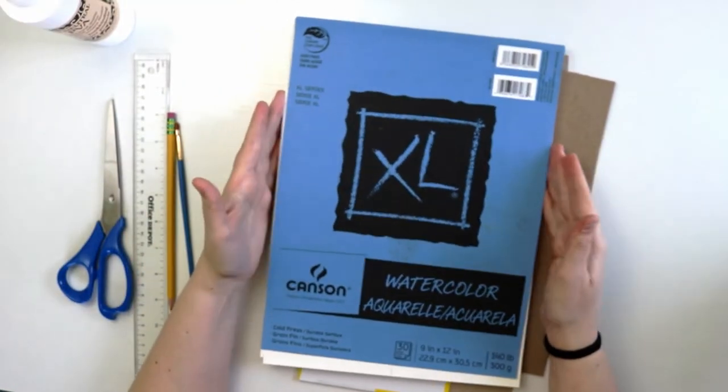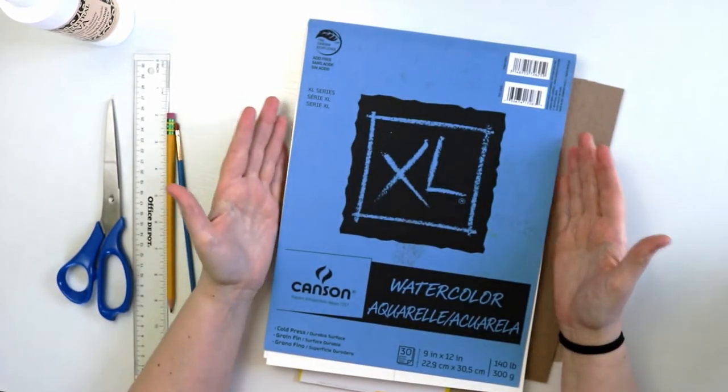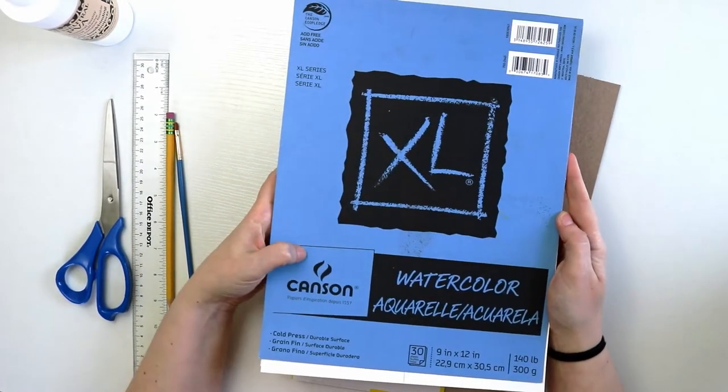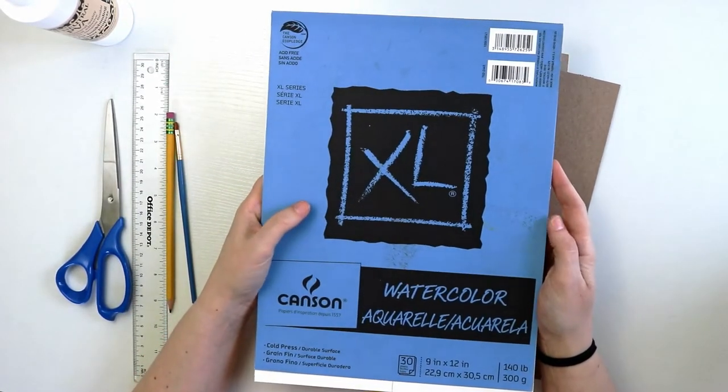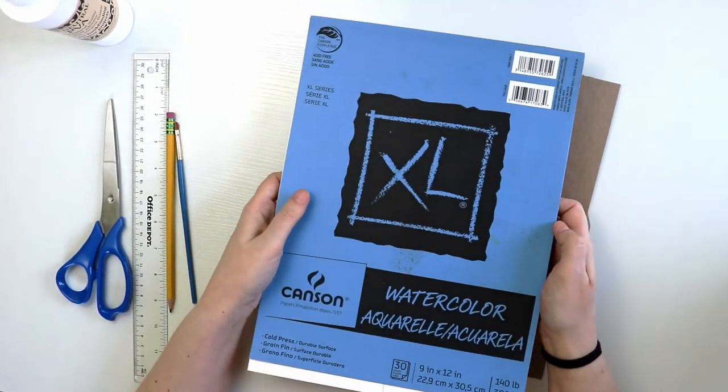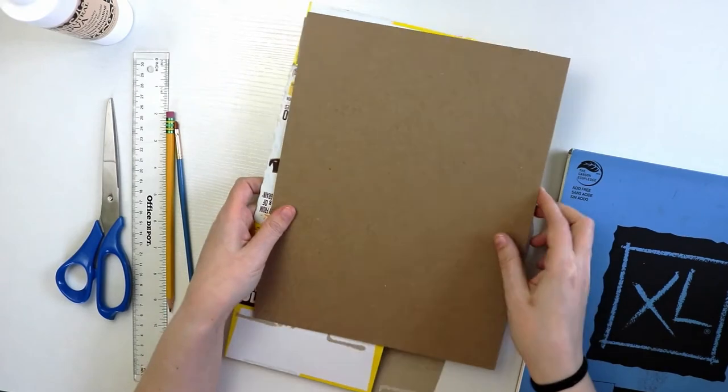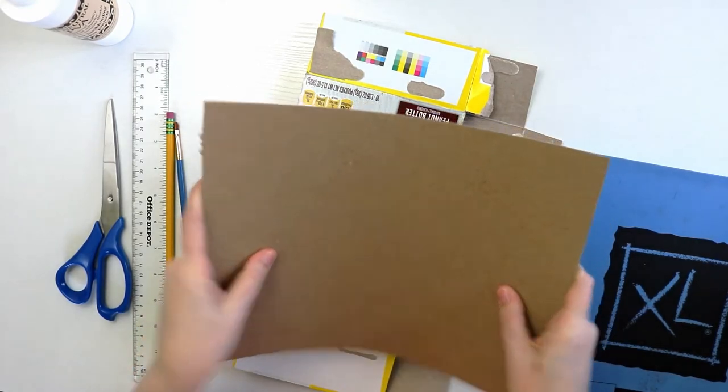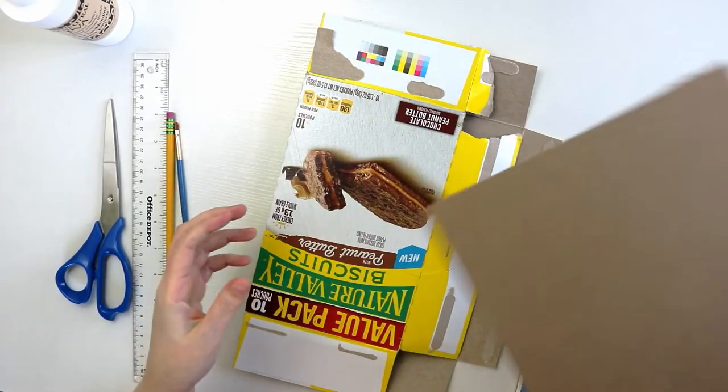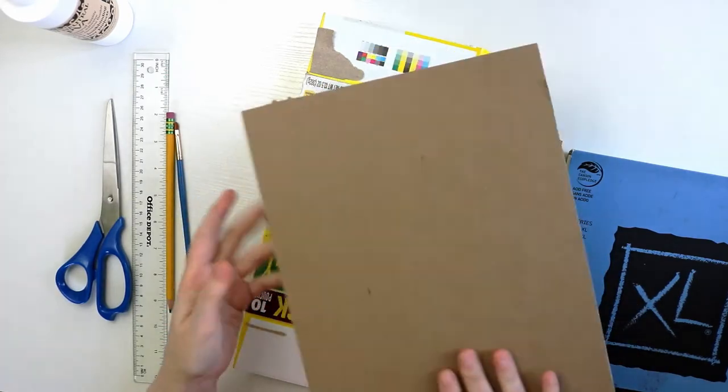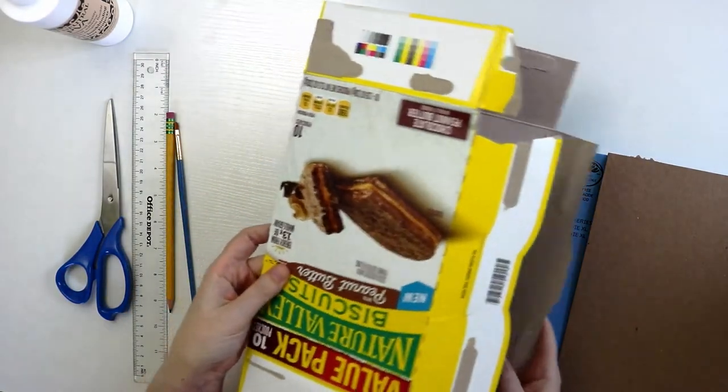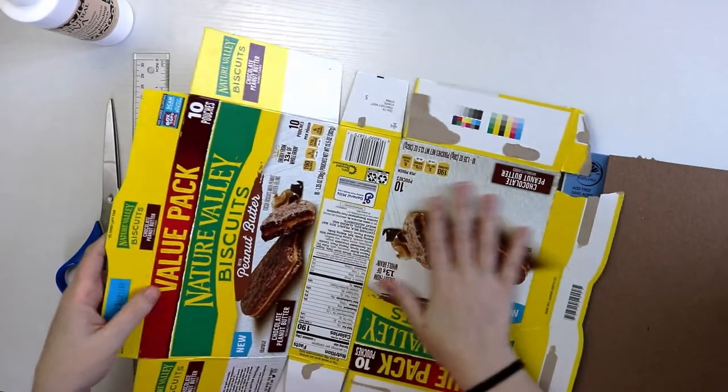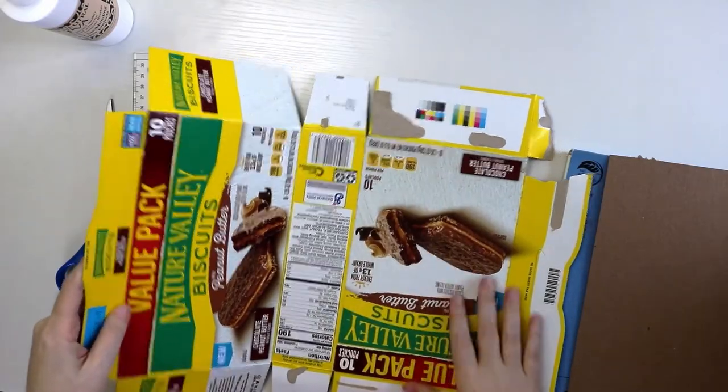Next you're going to need some paper and I'm specifically doing a mixed media watercolor art journal. So I'm going to use some of my Canson XL watercolor paper pad that I have a few of these laying around. And lastly you're going to need some kind of cover for your journal. This is a piece of chipboard so it's stiff but flexible and if you don't have a piece of chipboard laying around you can also use something like a cereal box. It's thick enough to provide a nice cover and if you don't like the printed side you can always paint over it.